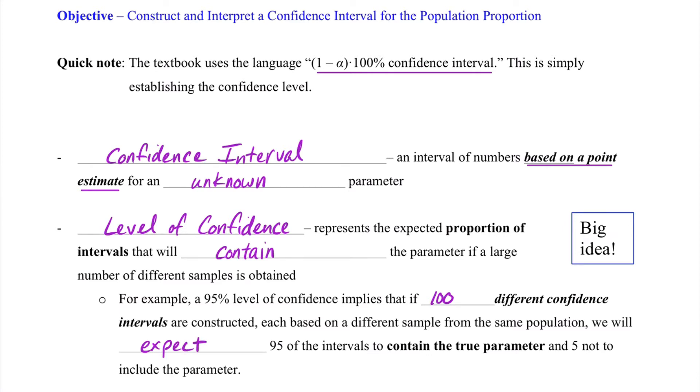And 5 of them would not include the parameter, meaning 5 of those guys we would expect to actually be misleading. Because keep in mind, we don't know the parameter. So instead, all we have is sample data leading us to this conclusion with some level of confidence.